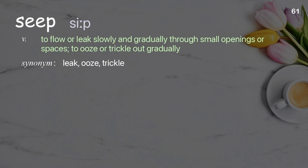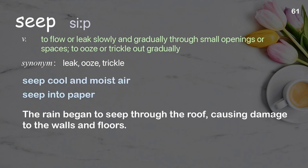Seep: to flow or leak slowly and gradually through small openings or spaces; to ooze or trickle out gradually. Examples: seep cool and moist air, seep into paper. The rain began to seep through the roof, causing damage to the walls and floors.